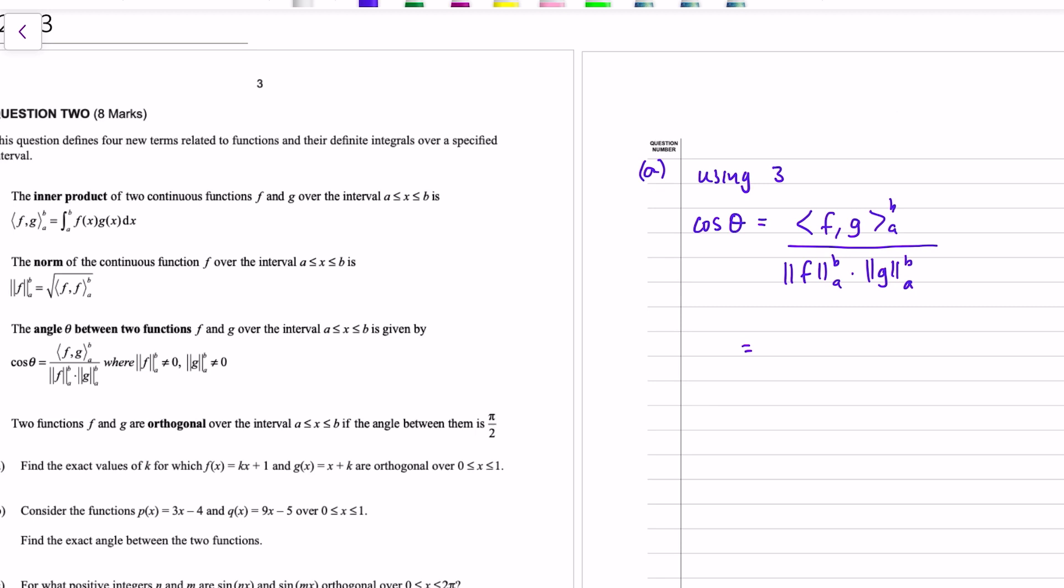Okay, so orthogonal, angle between them pi over 2. So we need to use the angle function, okay, using equation 3. Cos theta is equal to this random thing over this equally random thing. Okay, and then we go a bit further than that. Well, theta is pi over 2 for orthogonality, and cos of pi over 2 is 0.